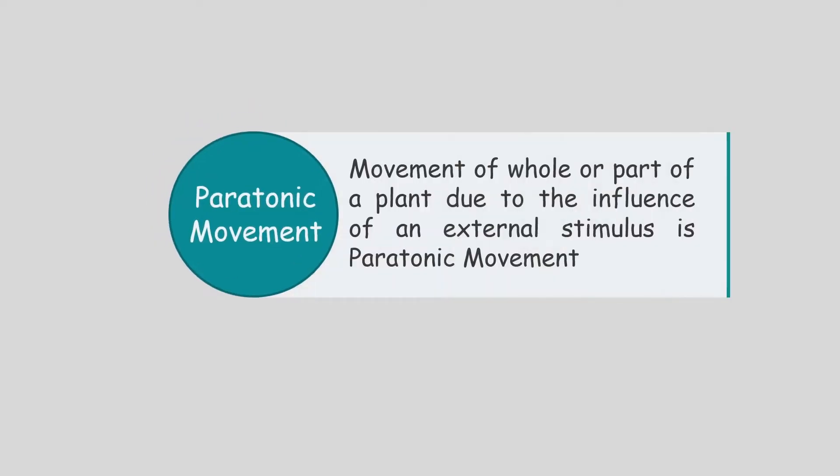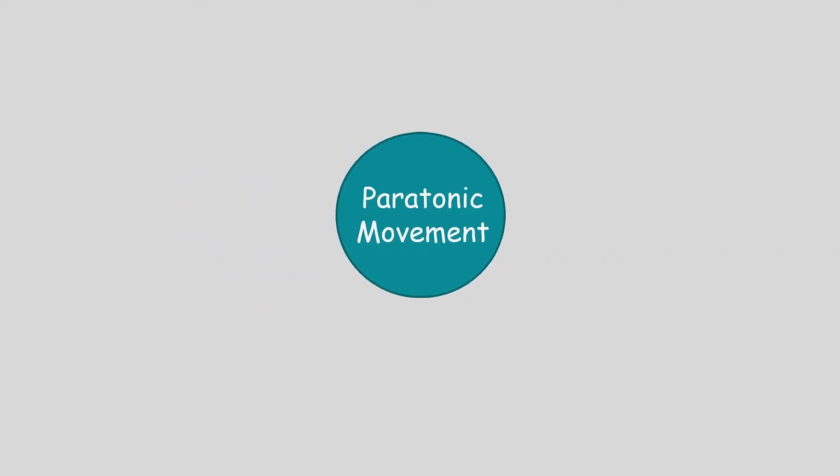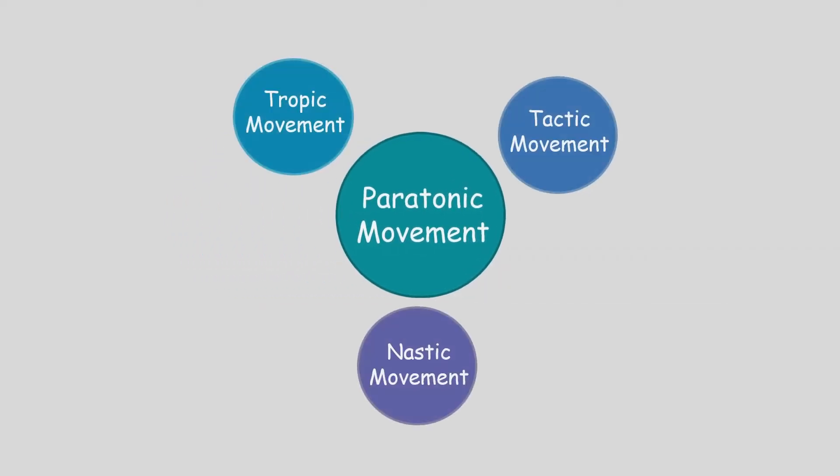Movement of whole or parts of a plant due to the influence of an external stimulus is paratonic movement. There are three types of paratonic movements: tropic movement, tactic movement, and nastic movement.